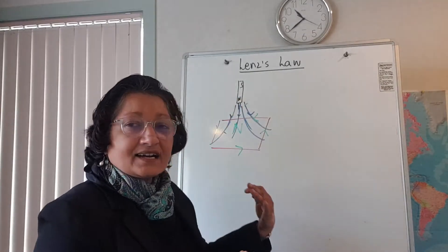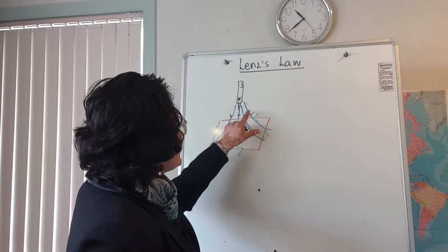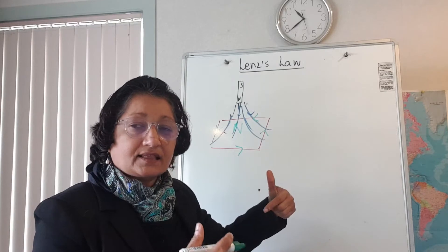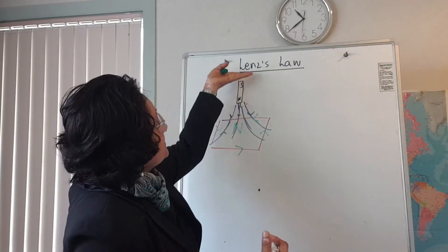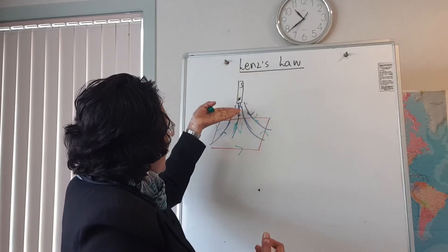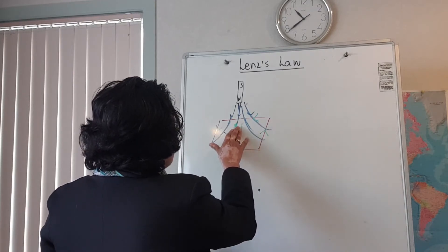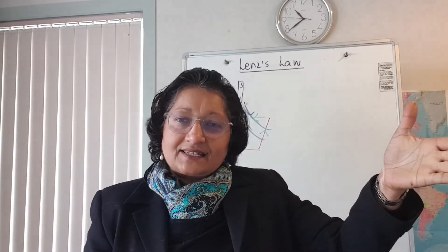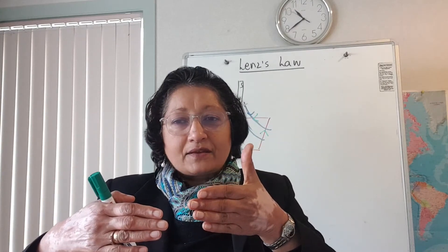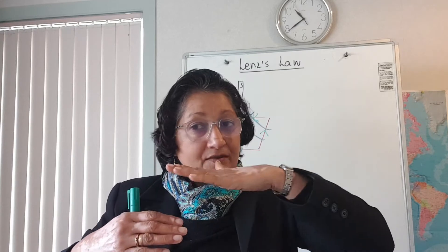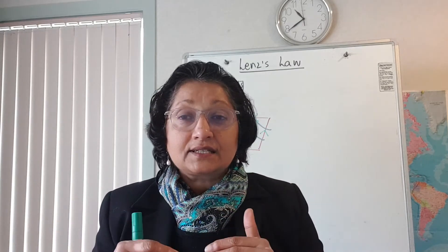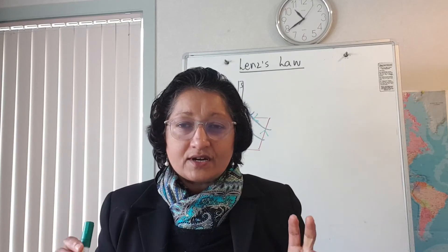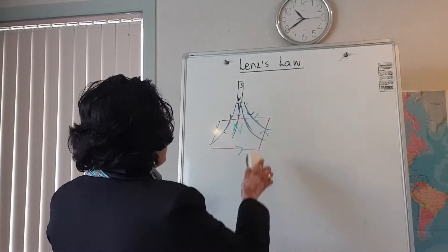When the magnet is leaving, again you're going to get an opposing force because the current is going to act in such a way that the magnetic field it produces will prevent the magnet from leaving the coil. So it's going to induce a south pole, and if it induces a south pole here the current is going to flow the other way. That is why when a magnet enters the coil the current flows one way, and when the magnet leaves the coil the current flows the other way. If the magnet is stationary, nothing happens because the lines of flux are not changing — the key is you need changing flux in the presence of a conductor.